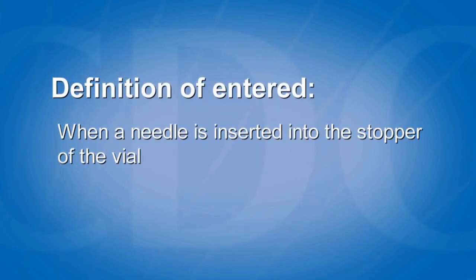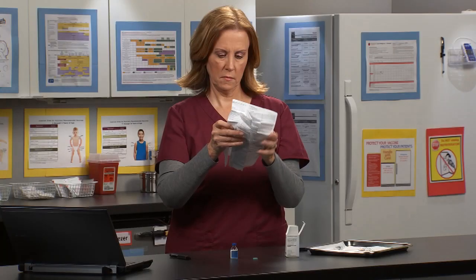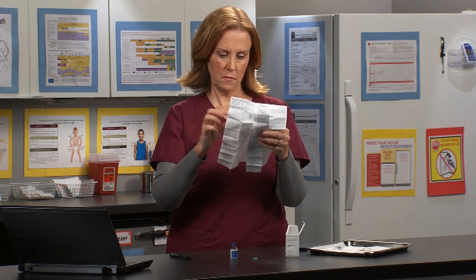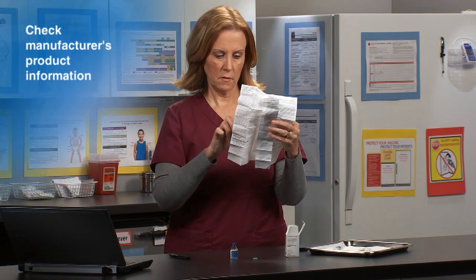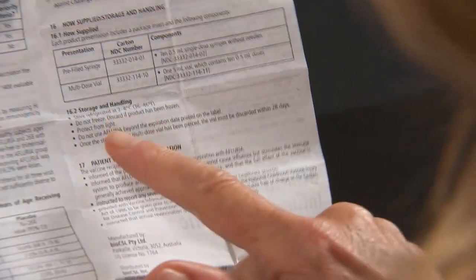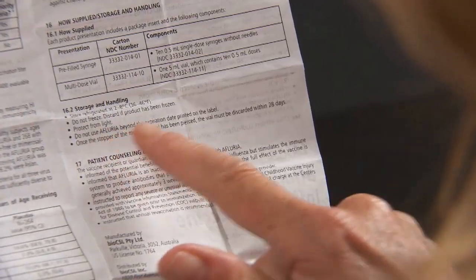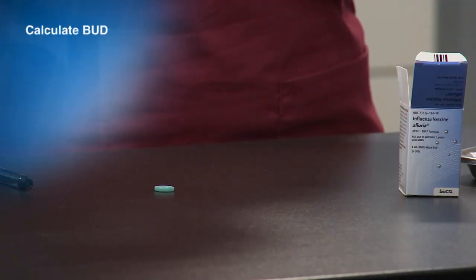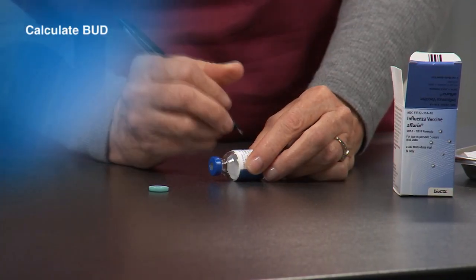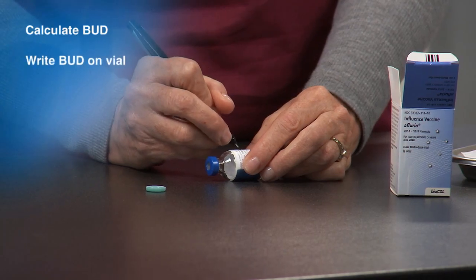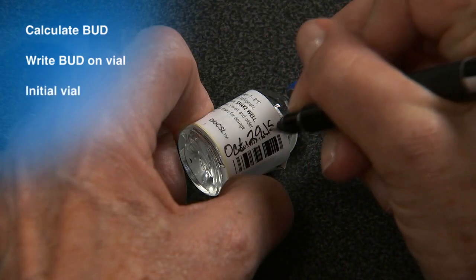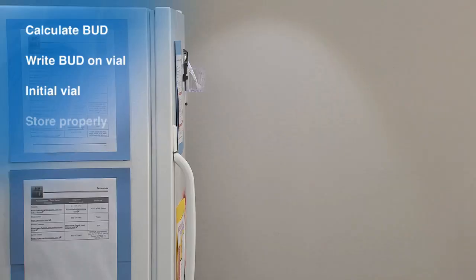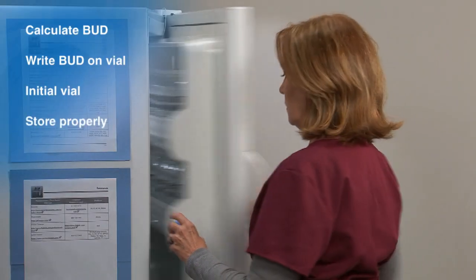Entered is defined as when a needle is inserted into the stopper of the vial. To determine the BUD, first check the manufacturer's product information. Depending on the product, the manufacturer may recommend a BUD of either days or hours. Once the BUD is calculated, it should be written on the vial. The person who calculated the BUD should initial the vial and properly store the vaccine.